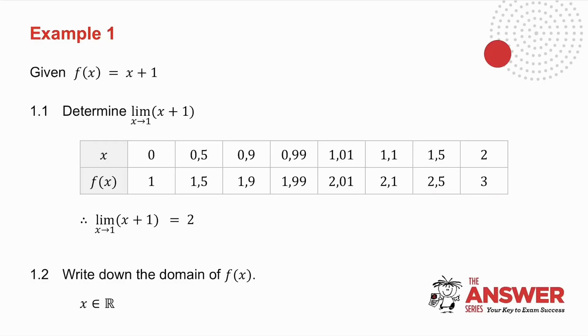What happens as I take x closer and closer to 1? Well, as I'm taking x closer and closer to 1 from the left and closer and closer to 1 from the right, what is my answer getting closer and closer to? It's getting closer and closer to 2. So that means that as x tends to 1, as x gets closer and closer to 1, x plus 1 gets closer and closer to 2. We talk about the limit as x tends to 1 of x plus 1 being equal to 2.